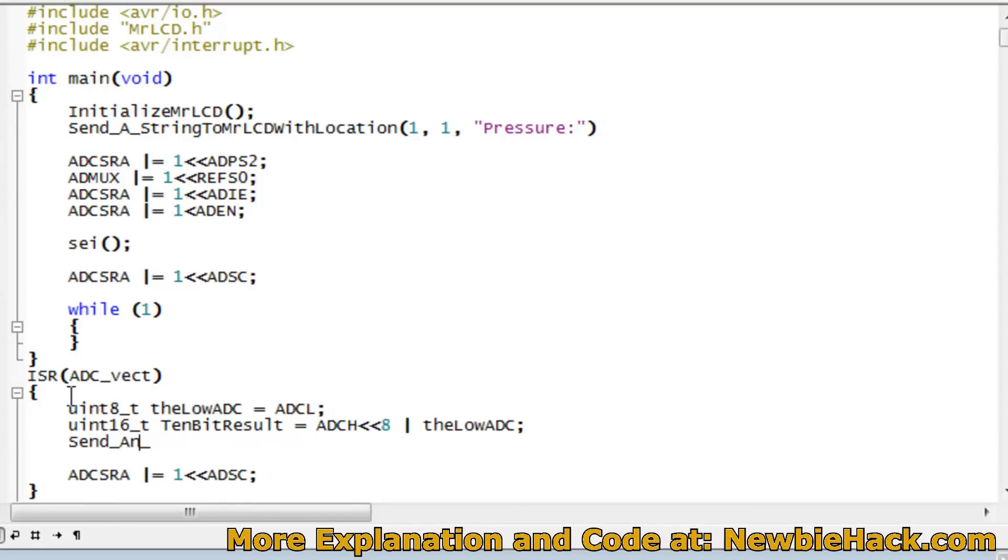And now we're ready to display that number on the LCD. We'll use send an integer to the LCD, Mr. LCD. And this particular routine has the location built in, X and Y. So we've got to figure out what the X is. Let's go to pressure and see how long this is. That's 9. A space for 10 and 11. So on the 11th position. And on the first line. We'll have the ADC result. Which is the 10 bit result. We'll just copy it from there and paste it. And this will be 4 digits long.